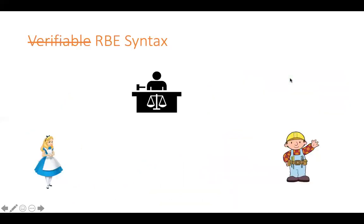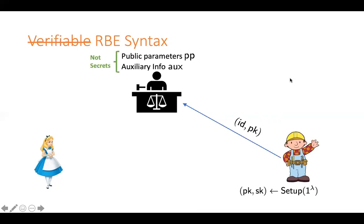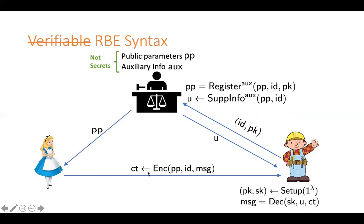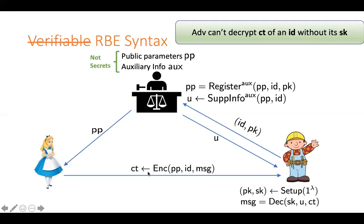Let's first define the syntax of regular registration-based encryption. Bob first samples his public key-secret key pair using regular public key encryption, then sends his identity-public key pair to the authority for registration. The authority maintains all the information of all registered users in a data structure called auxiliary information. The authority registers Bob by updating this auxiliary information along with the public parameters and publishes the new public parameters to everyone. Alice can encrypt a message just using these public parameters and the identity of Bob. The authority can also give some supplementary information to Bob, and Bob can use this additional information along with his own secret key to decrypt the ciphertext.